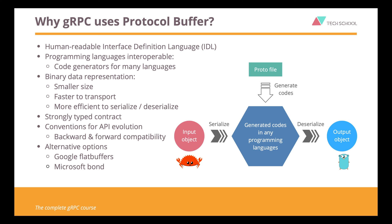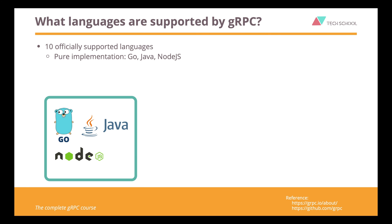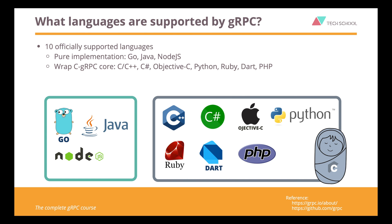But in my opinion, protocol buffer is already a great choice. It supports a lot of programming languages, with 10 officially supported where Go, Java, and Node.js are purely implemented. And 7 others are wrappers of the gRPC core C, namely C++, C Sharp, Objective-C, Python, Ruby, Dart, and PHP. Besides, there are many other unofficial libraries for other languages, such as Swift, Rust, TypeScript, Haskell, and so on.